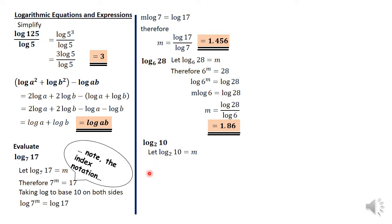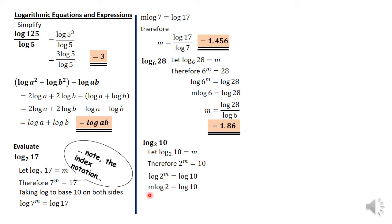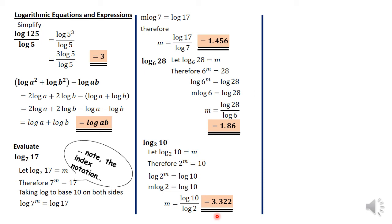Moving on to another one: log of 10 to base 2. Let the expression equal m again. Put it in index notation: 2 raised to the power m is equal to 10. Take logarithm to base 10 on both sides and move the m so the expression looks like m log 2 is equal to log 10. Divide both sides by log 2, and the answer would be 3.322.